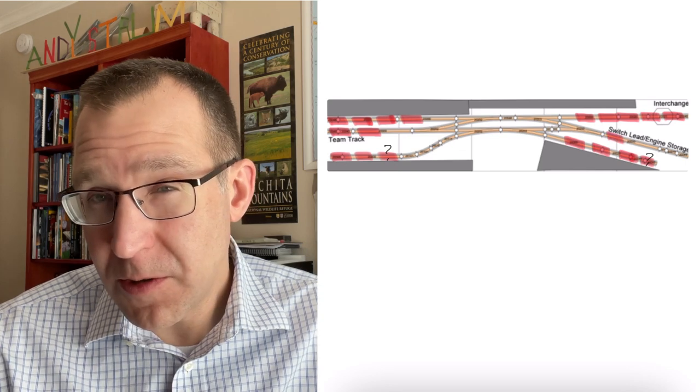Now, I would also have a capacity of probably five cars or so on the interchange track, four to five cars there easily. And then also the switch lead, it'll probably be an engine and plus two cars, maybe three, depending on how that exactly fits in real life to clear that first turnout.